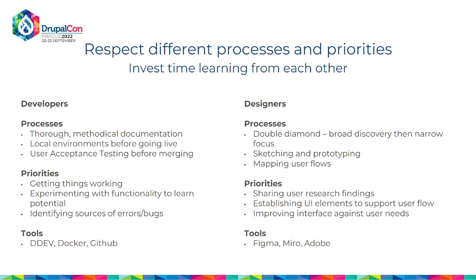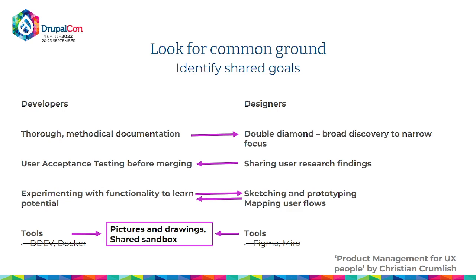It also helps to respect each other's priorities and processes. Developers care about documentation, user acceptance testing before merging changes, and experimenting with functionality. From the design side it's the divergent and convergent double diamond process — sketching, prototyping, mapping user flows, and disseminating user research findings. When you understand those differences, look for common ground: designers converging on focus should use the documentation developers have created, learning about capabilities. User research findings can go into the UAT document so that things are checked for both functionality and UX.